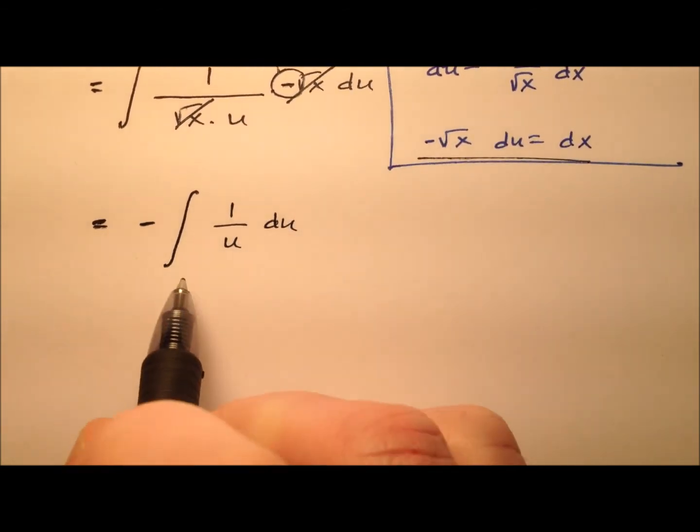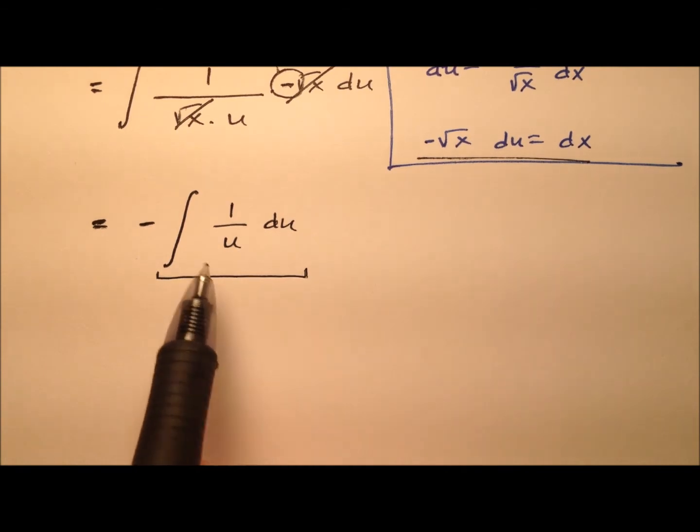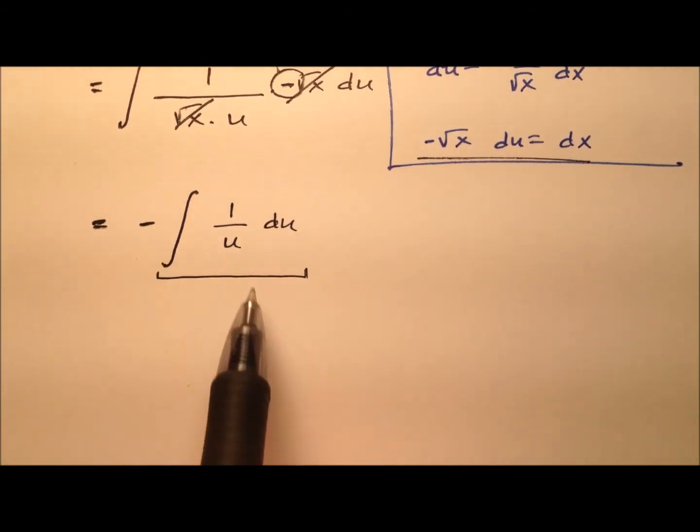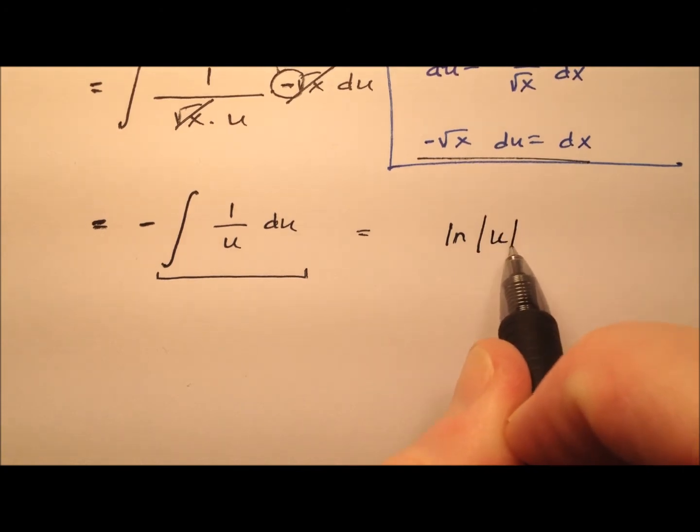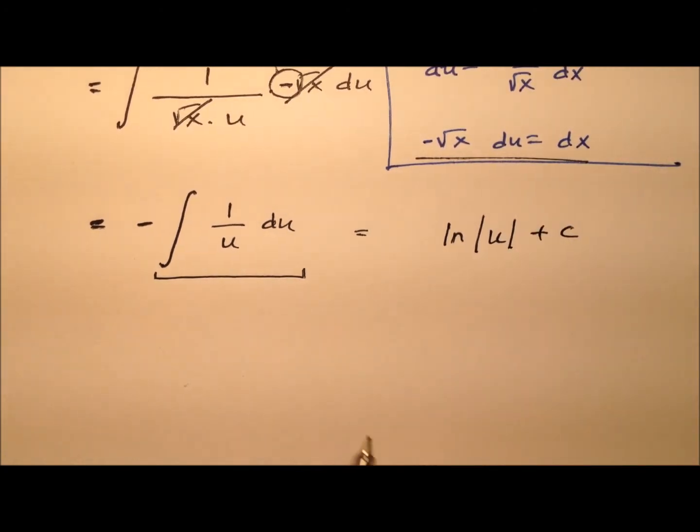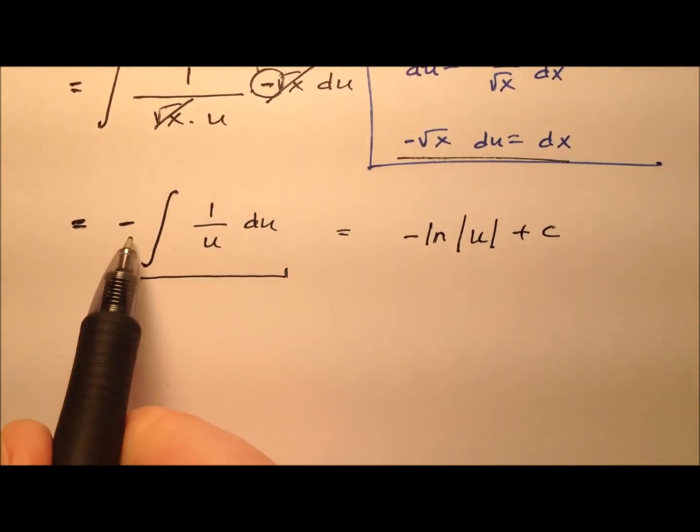That is not bad at all. This is just a general formula. The integral of 1 over u is just going to be the natural log of the absolute value of u plus c. But of course we had this negative out front.